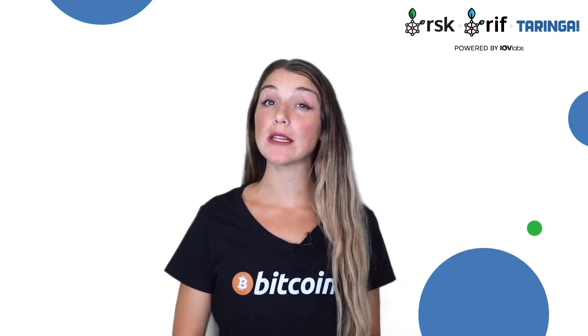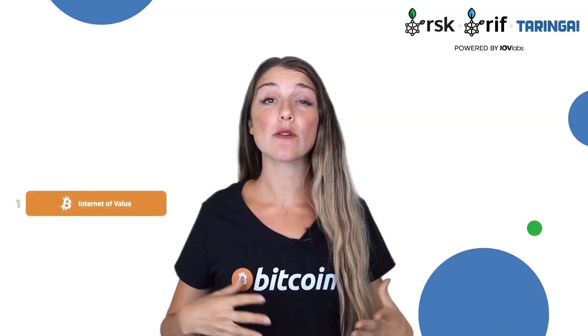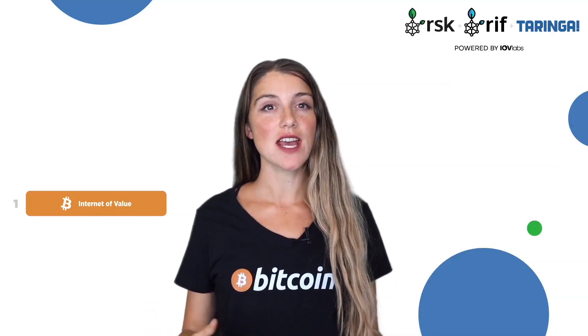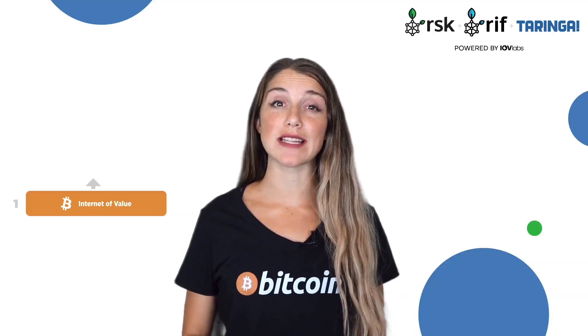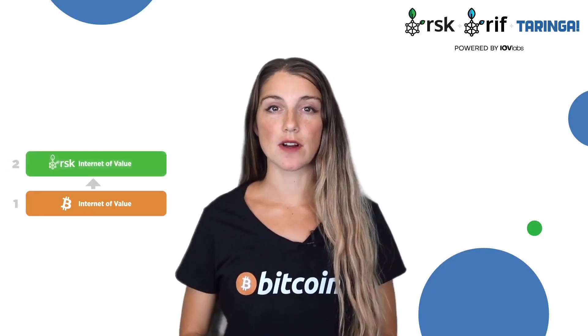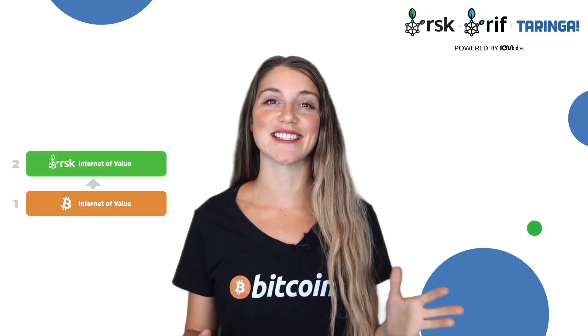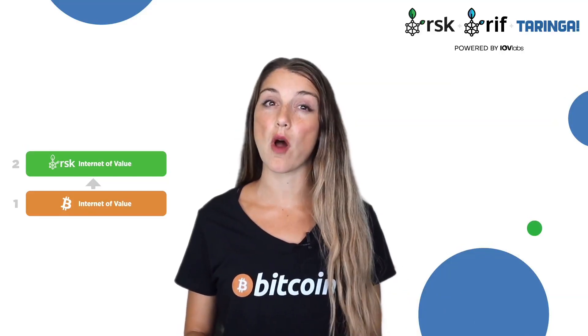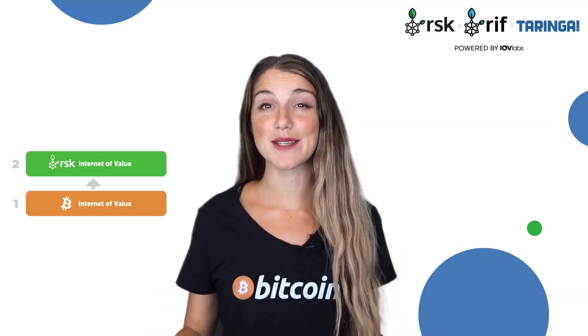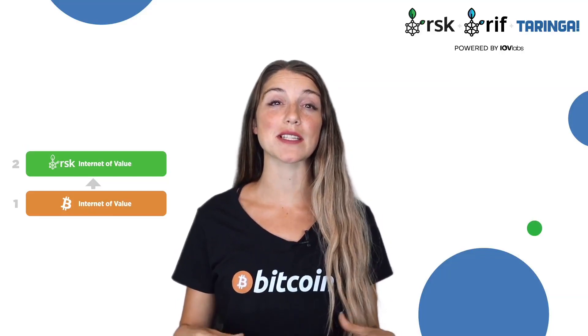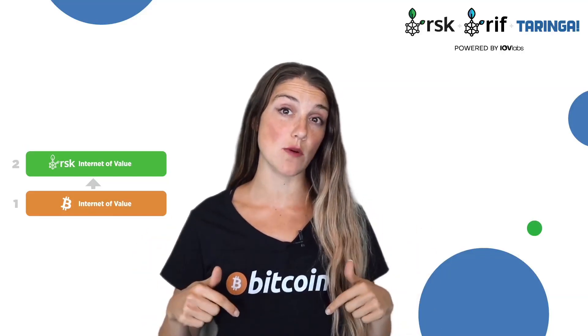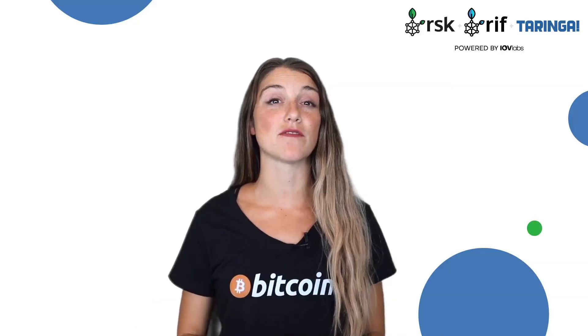Hello everyone and welcome to a new video. In the previous one we learned about Bitcoin, how its decentralization was achieved, and why we chose it as layer one of the internet of value. Now we're going to continue with layer two which is RSK. I'll try to explain it in the simplest way possible in this first video on the subject, and then at the end I'll give you some follow-up steps to continue with your learning.